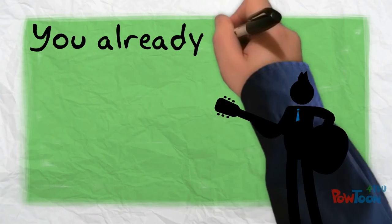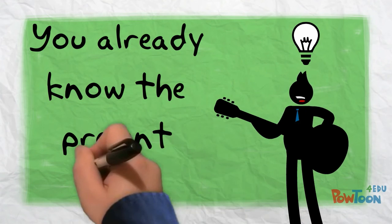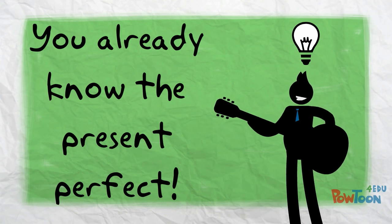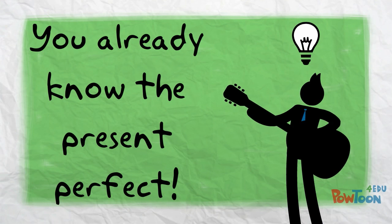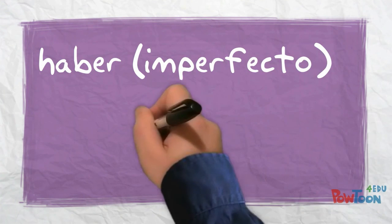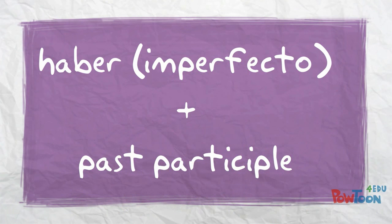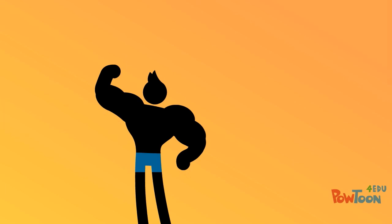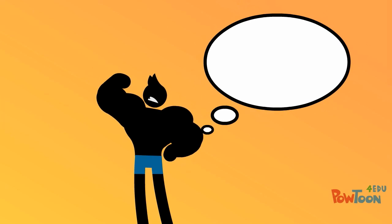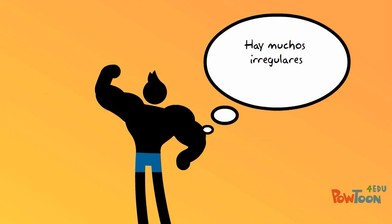Forming the pluscuamperfecto is pretty easy after learning the present perfect, as the past participles are the same — yes, even the irregulars. To form the pluscuamperfecto, we start with a form of haber in the imperfect, then follow it up with the past participle, which is formed by adding -ado or -ido to the stem of a verb, unless it's irregular. I'll leave a link in the comments to a list of past participles.